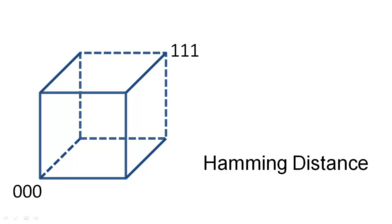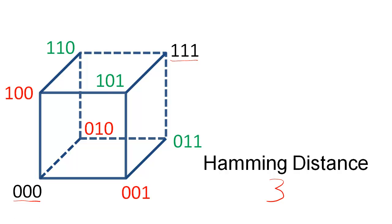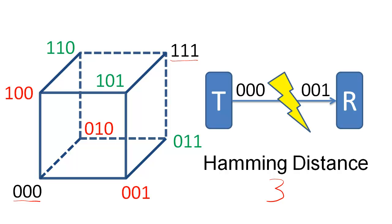If we add one more bit, we would have two valid code words whose Hamming distance would be 3, and a code with Hamming distance 3. In this situation, the receiving component could still detect if an error occurred in one bit, but now, because the erroneous word has a Hamming distance from one valid code word that is less than the distance from the other, we can correct the error.